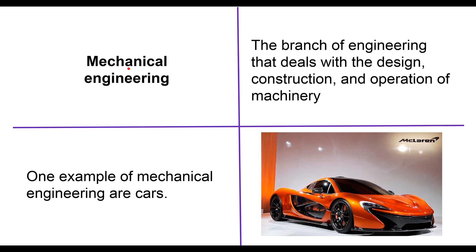Next we have mechanical engineering, which a lot of people are more aware of because it deals with mechanics and they think of a mechanic. Mechanical engineering is the branch of engineering that deals with the design, construction, and operation of machinery. An example of mechanical engineering is cars — I have a McLaren P1 here as an extreme example of how mechanical engineers push the limits. These are extremely fast cars, and every year they come up with a new model that pushes the boundaries of mechanics even further.